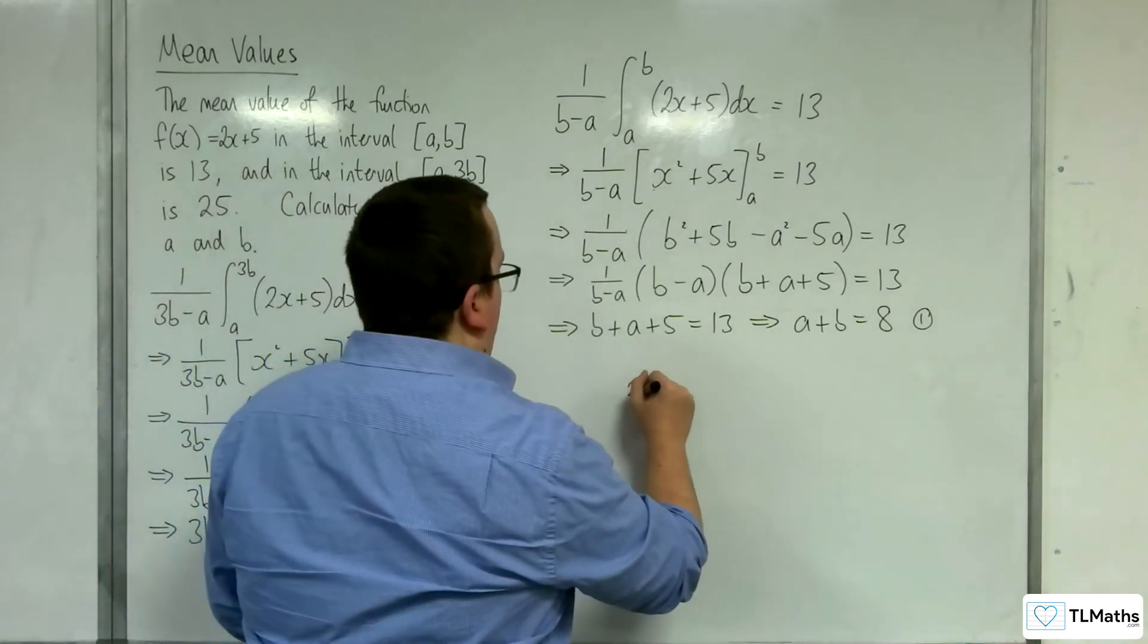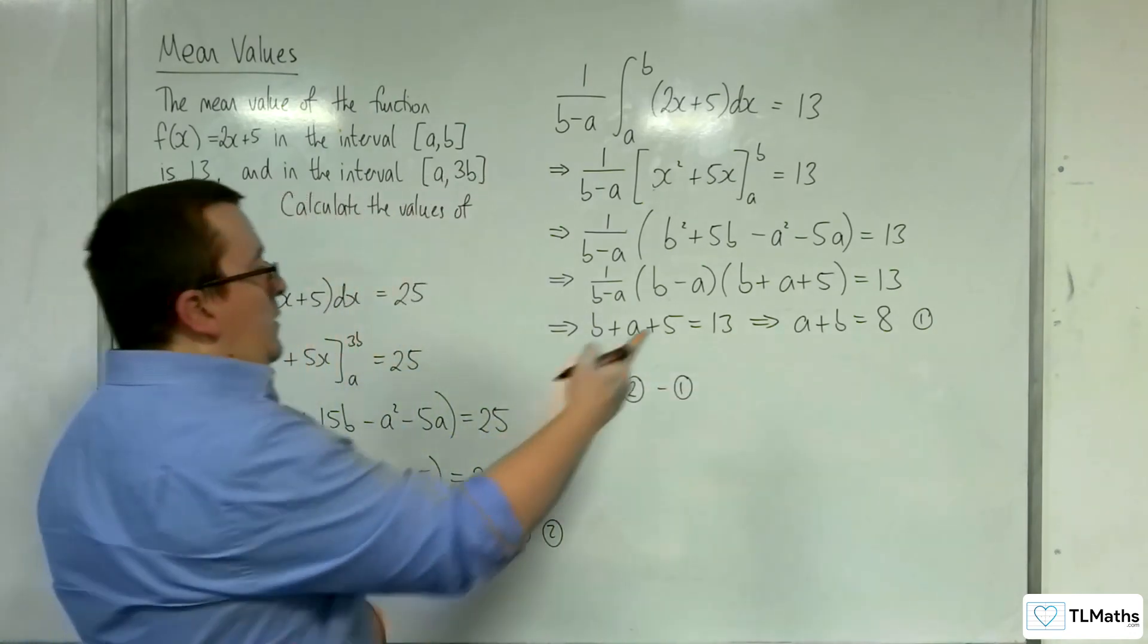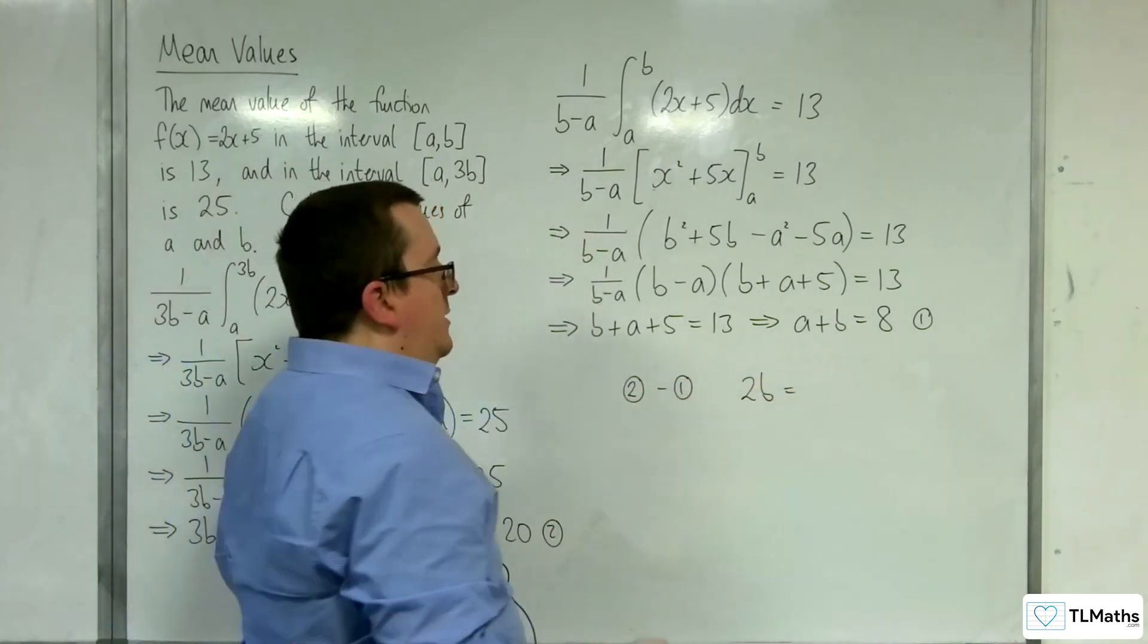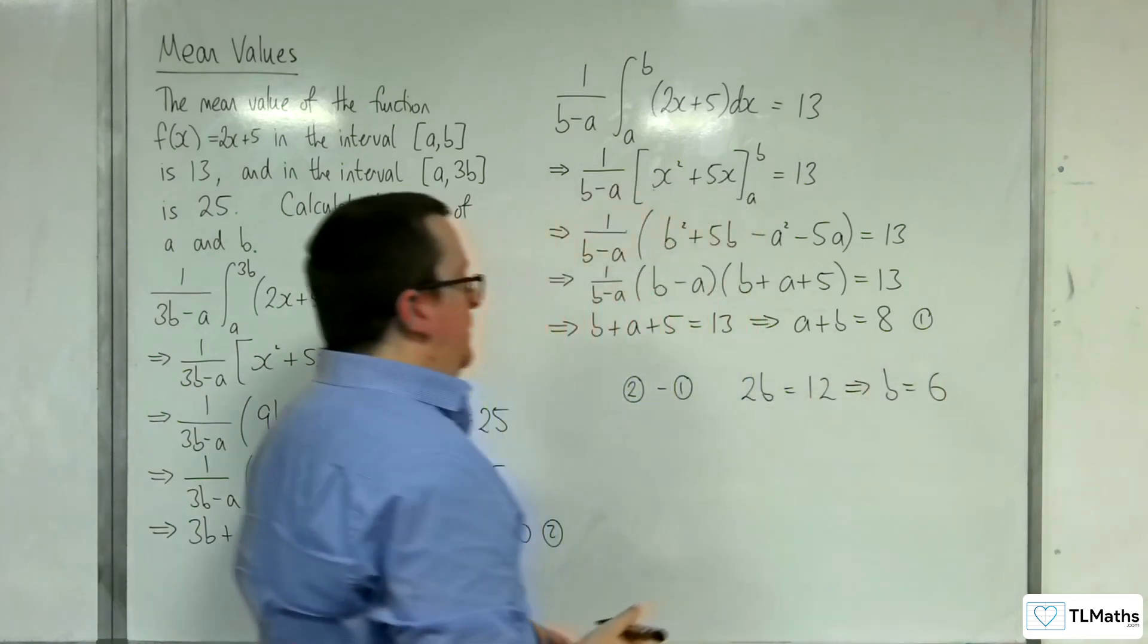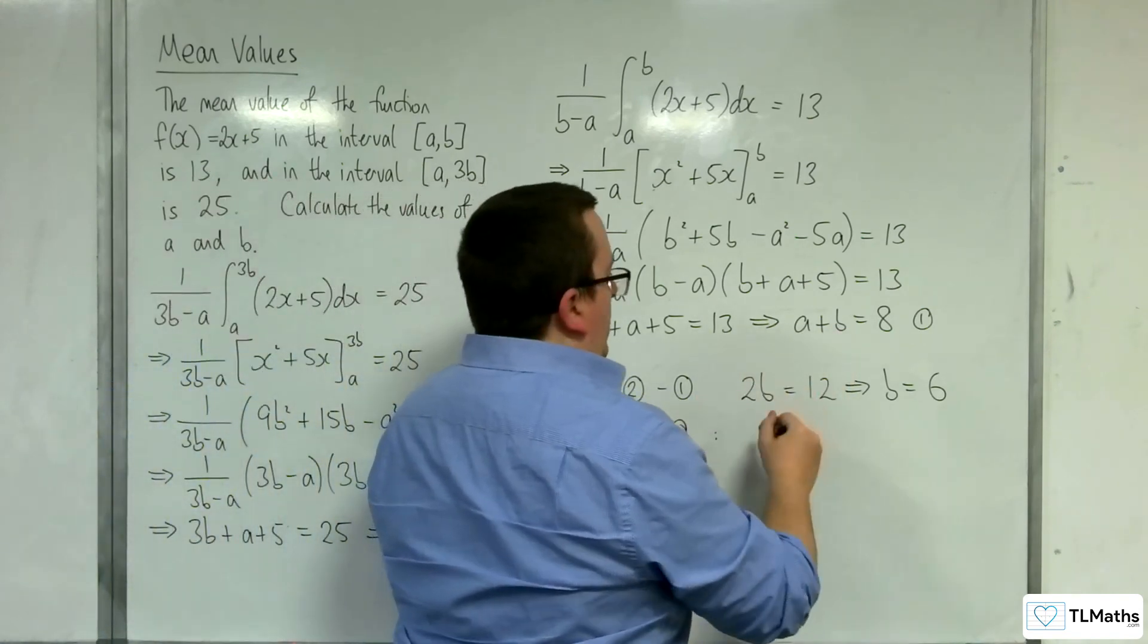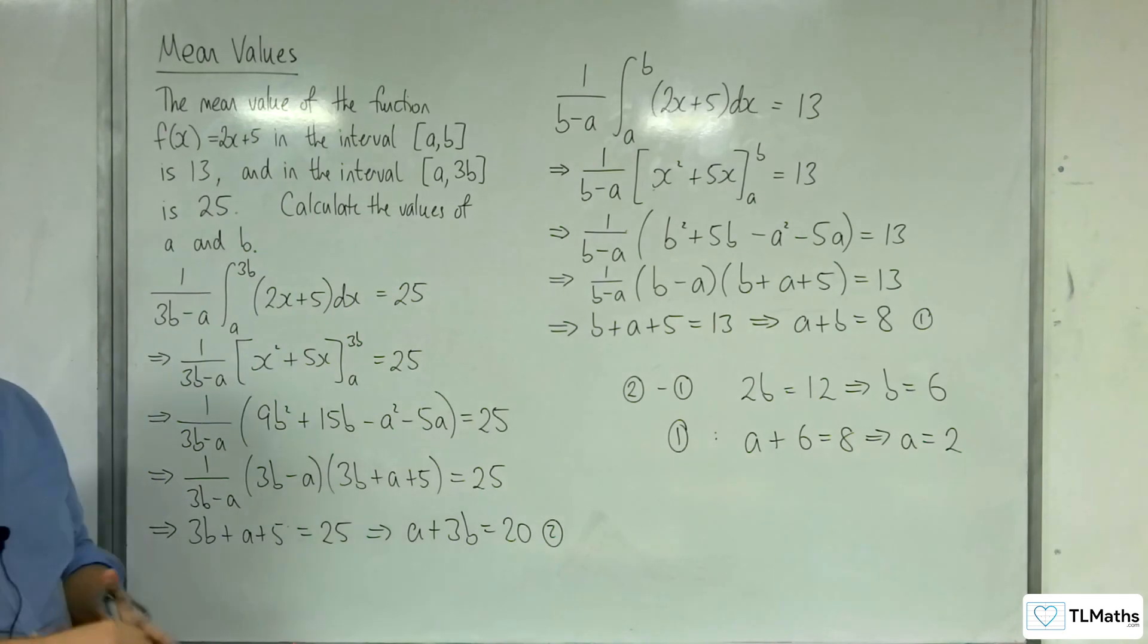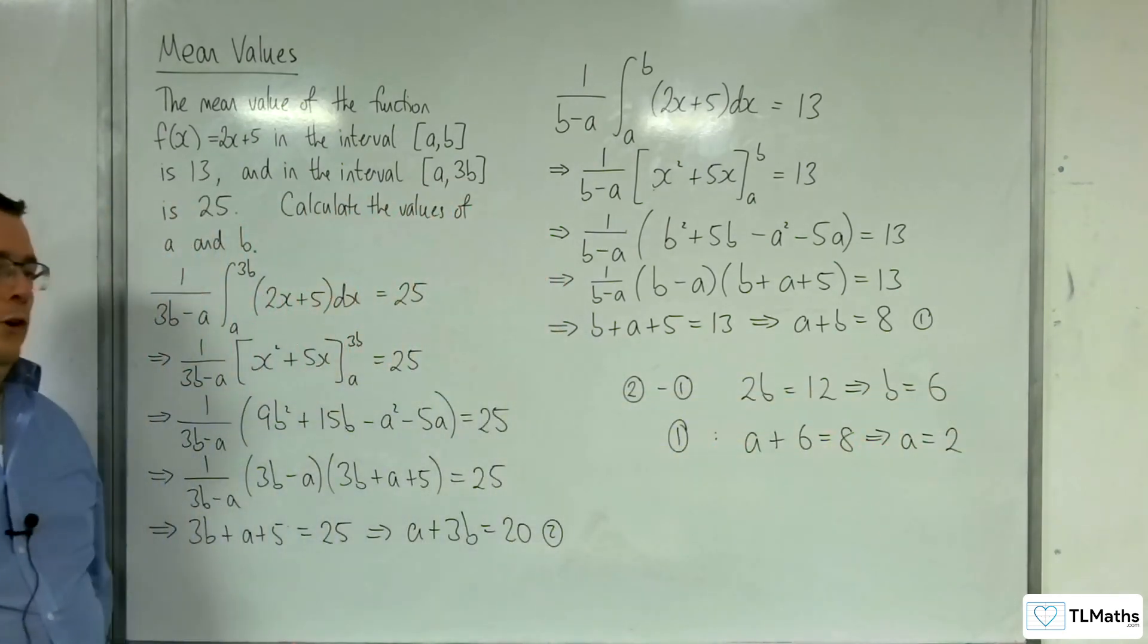So if I do equation number 2 take away equation number 1, I'm going to get a minus a is 0. 3b minus b is 2b. I've got 20 take away 8, which is 12. So b must be equal to 6. And substituting into equation 1, we're going to get a + 6 is equal to 8, so a must be equal to 2. So a = 2, b = 6 solves this problem.